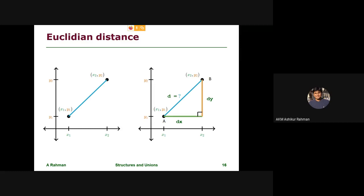The displacement components are: dx is the displacement in x, dy is the displacement in y. So dy = Y2 - Y1 and dx = X2 - X1, and the straight line distance is computed from these.